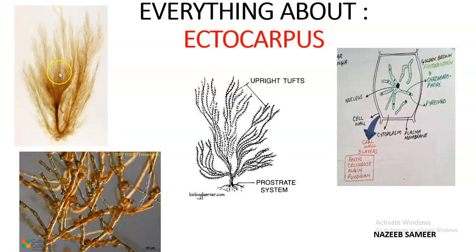Ectocarpus is majorly seen in the marine ecosystem, though there are some freshwater species also available. These marine brown algae are distributed worldwide and can be predominantly seen in the Atlantic coast. They are either free-floating or found lithophytic, meaning attached to the rock substratum. There are three different types of habitat: first, it is an epiphytic alga — it can be seen growing on the surface of some other alga, for example Laminaria.